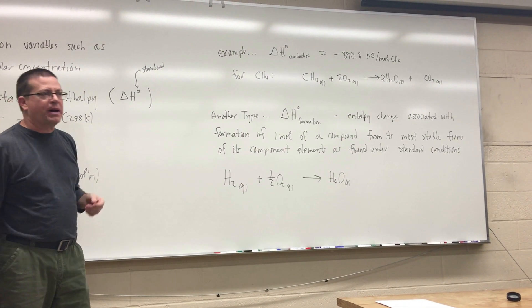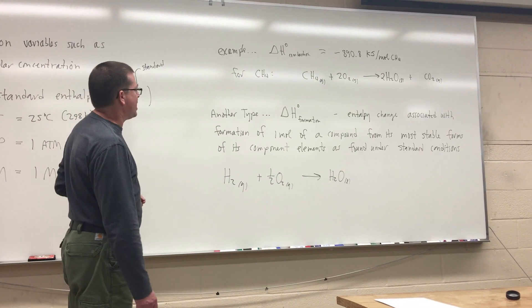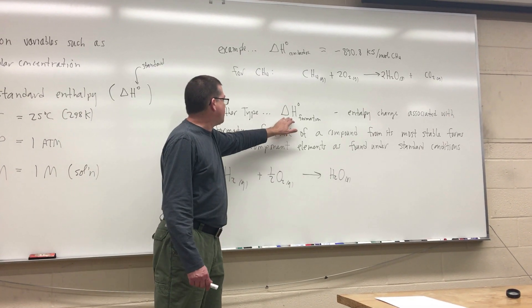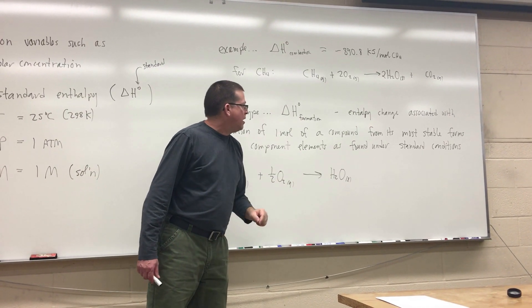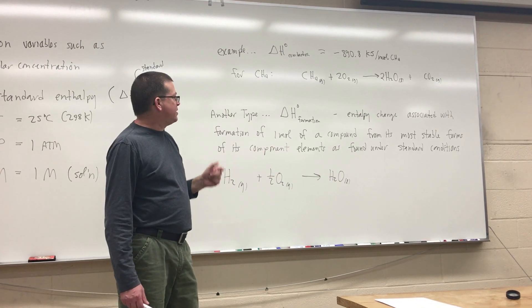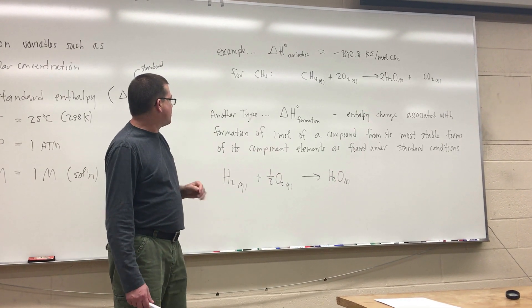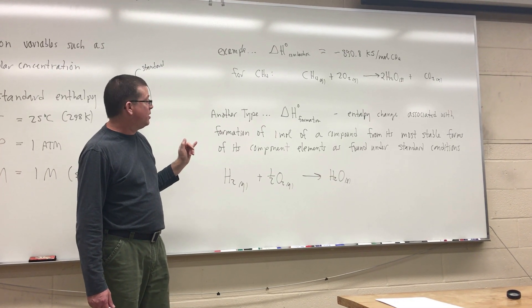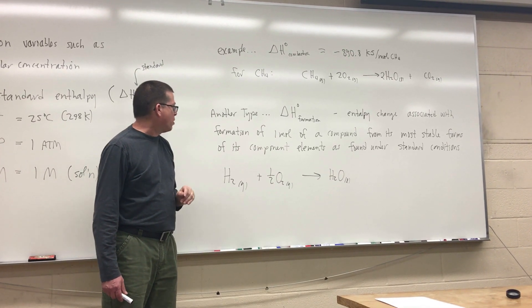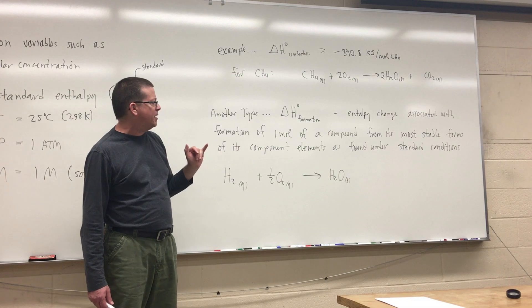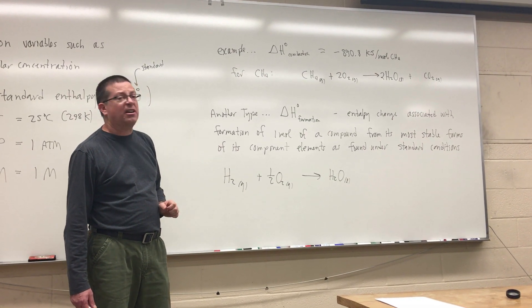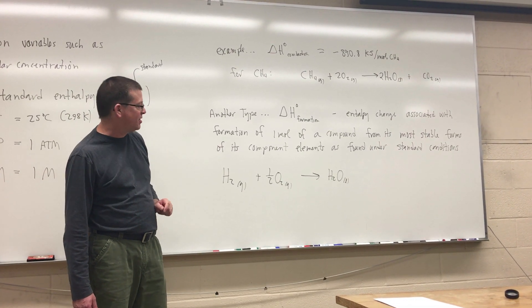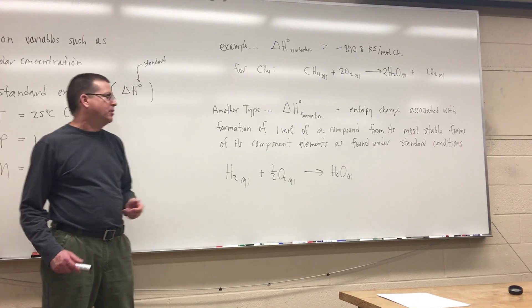Another type that we're going to talk about as we move toward the end of the chapter is going to be a standard enthalpy of formation. Now that's going to be defined as the enthalpy change associated with the formation of one mole of a compound from its most stable forms of its component elements as we find those elements under standard state conditions. So let's take a look at an example of this.